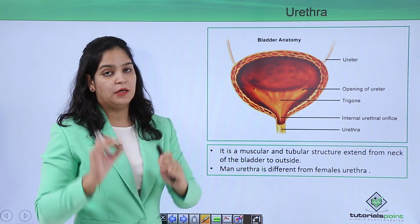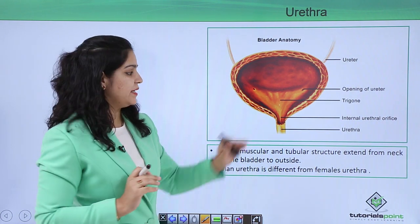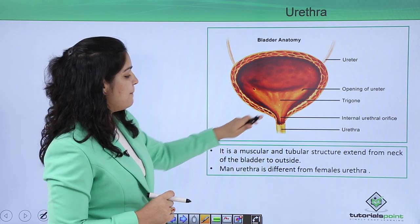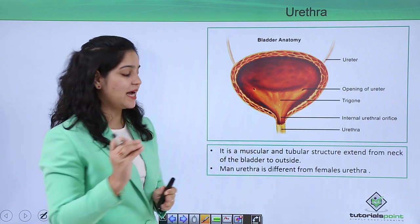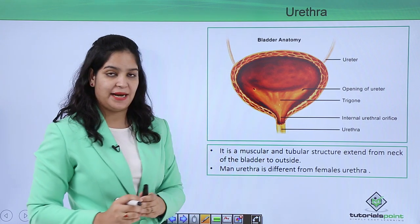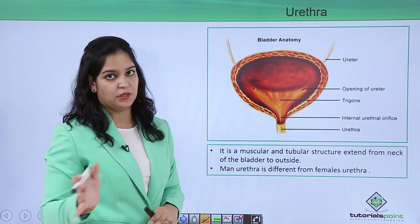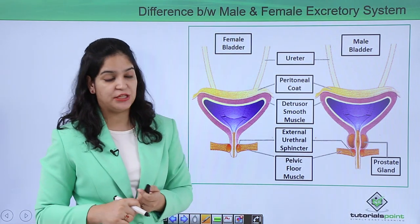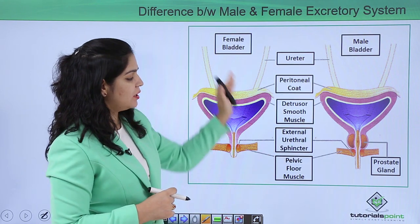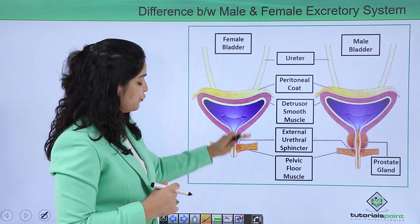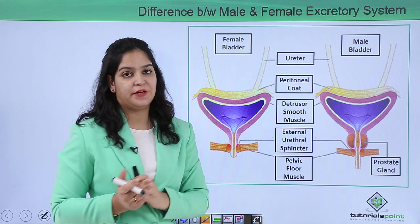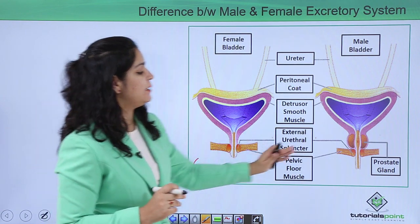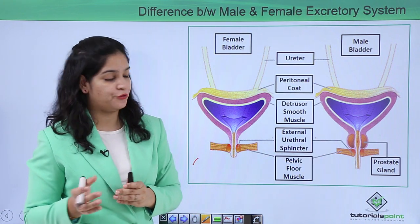The last part of the excretory system is the urethra, which is the opening through which urine comes out. It is a muscular tubular structure that starts from the neck of the urinary bladder and opens to the outside. The urethra of males and females is different — the female has only the urinary opening, while in males there is both the urogenital and urinary opening.